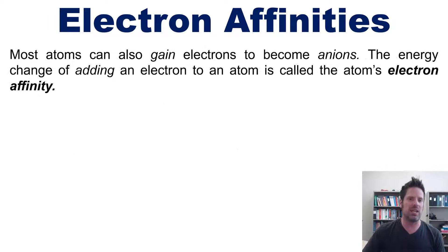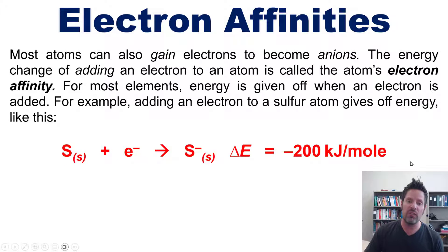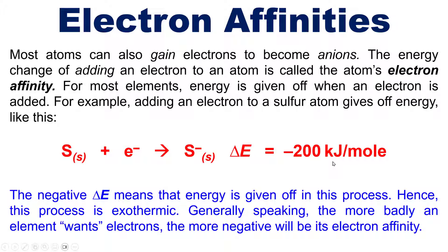Now most atoms can also gain electrons to become anions. The energy change of adding an electron to an atom, as opposed to taking one away, is called that atom's electron affinity. For most elements energy is actually given off when an electron is added. For example, adding an electron to a sulfur atom gives off energy as summarized in this chemical equation. The negative delta E here means that energy is given off or expelled to the surroundings during this process. Thus this process is exothermic.